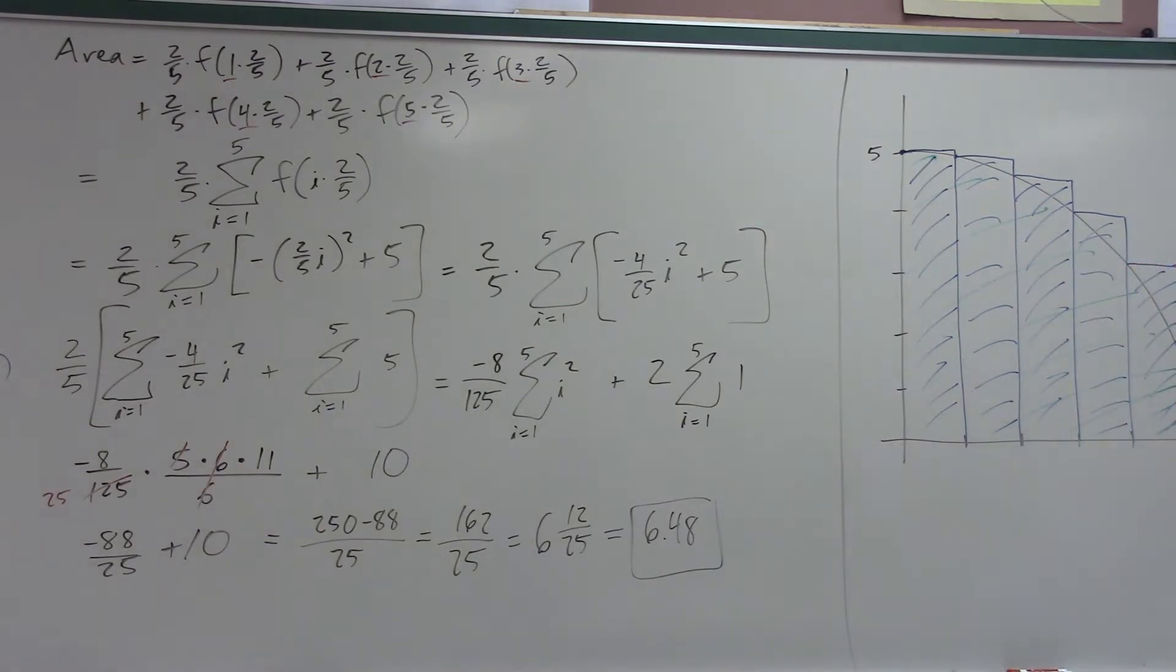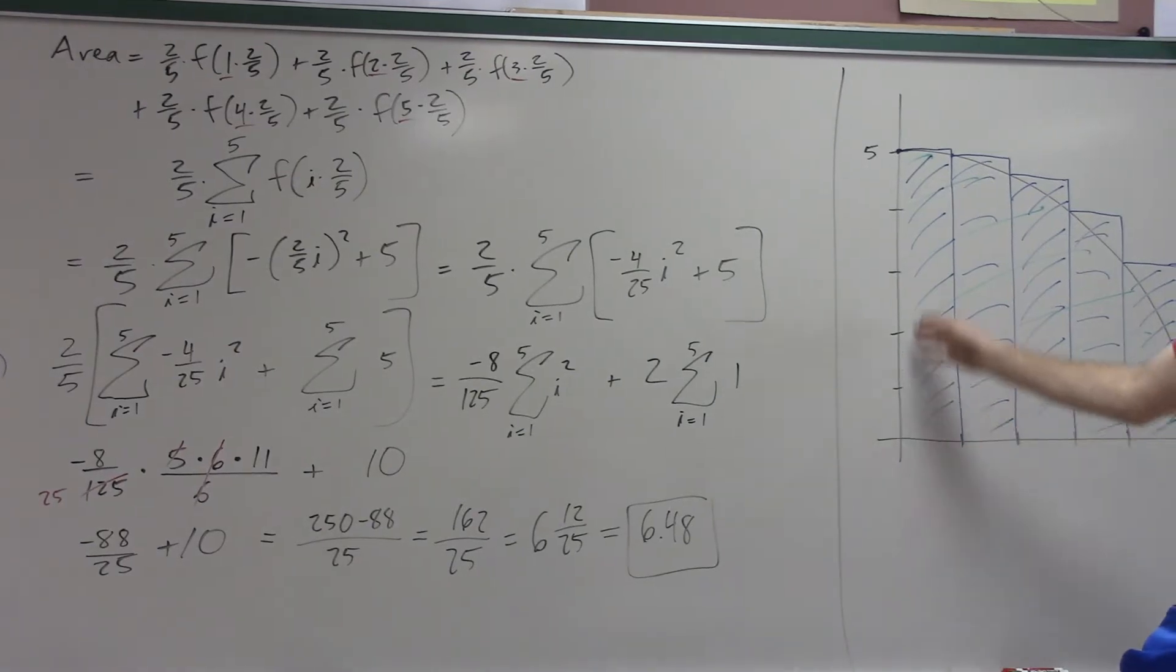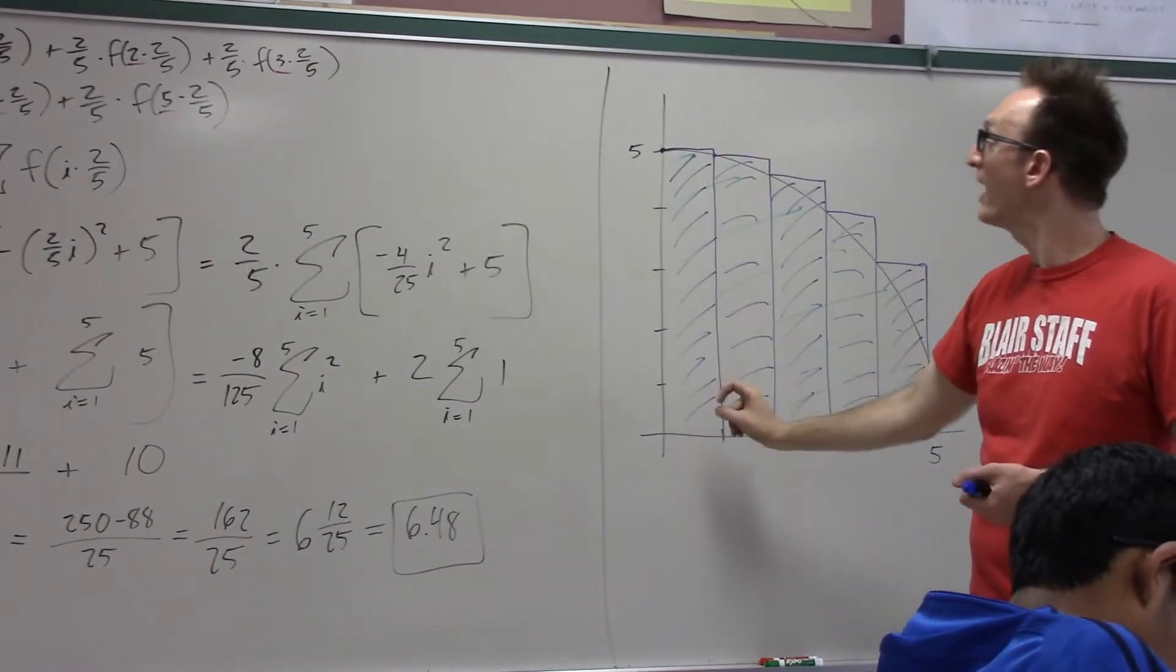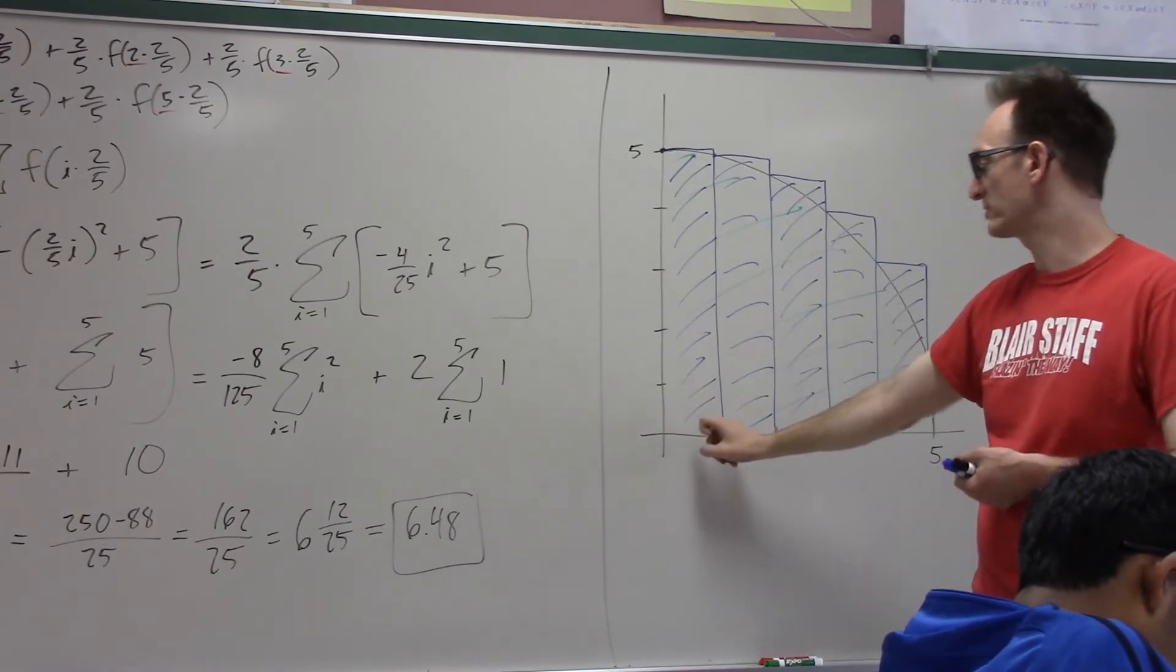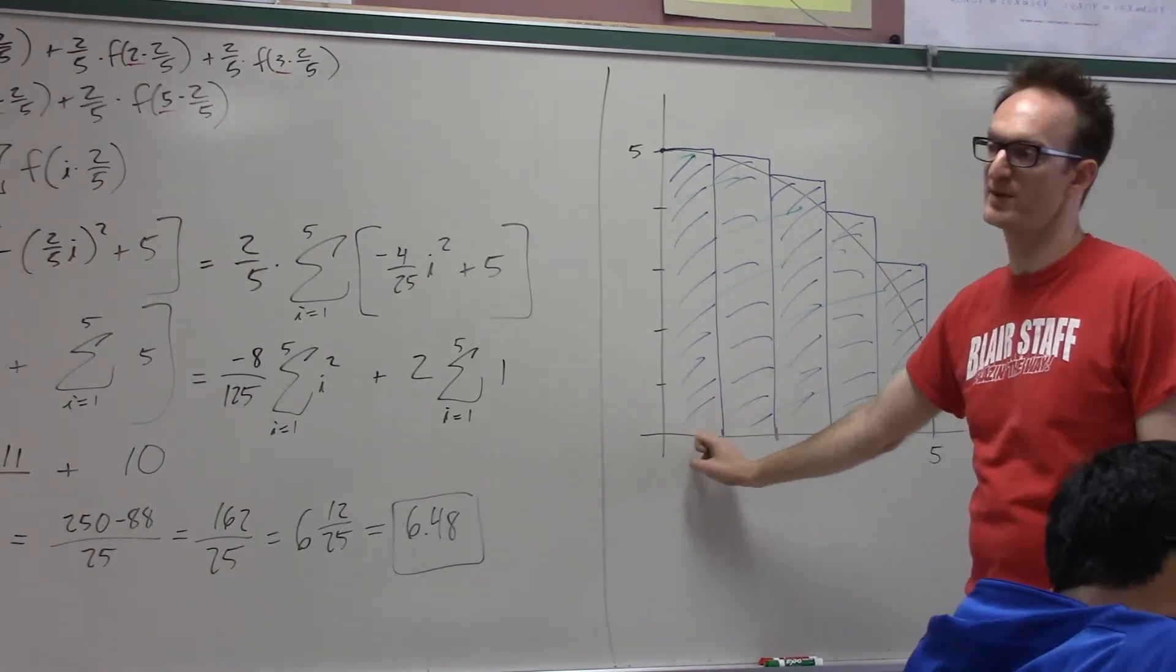Like here I sort of drew the rectangles above, but notice what did we do? You find the point at the two-fifths and then that's the top of the rectangle. That's how high the rectangle is. But which point from this sub-interval am I using?